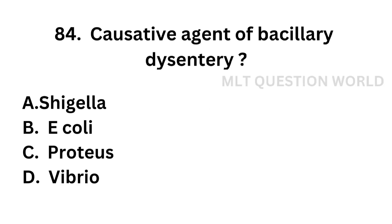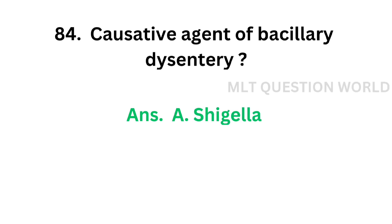Question number 84: Causative agent of bacillary dysentery — Option A: Shigella, Option B: E. coli, Option C: Proteus, Option D: Vibrio. The correct answer is Option A, Shigella. Bacillary dysentery is caused by Shigella.